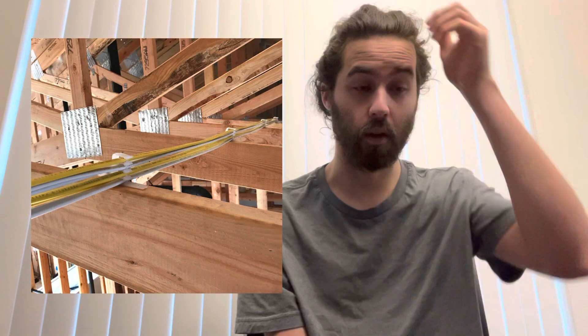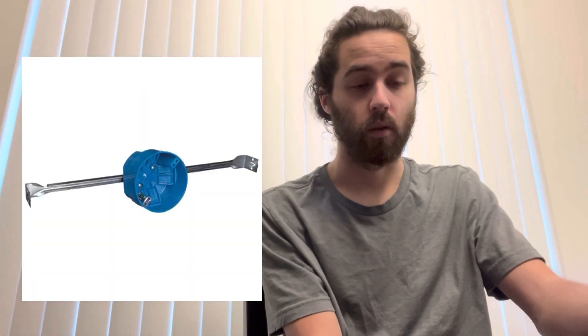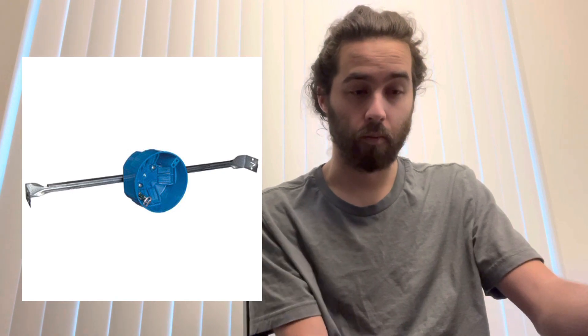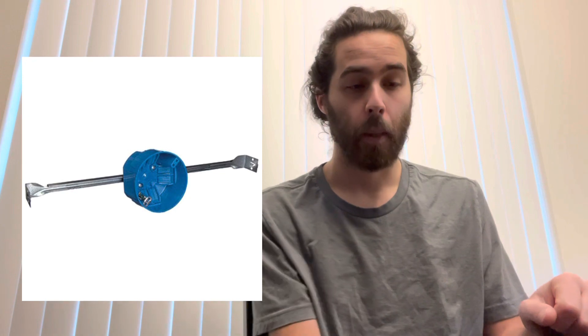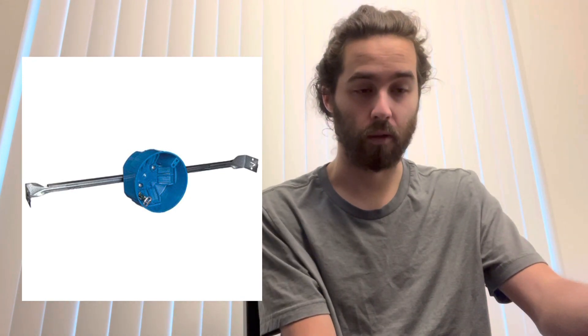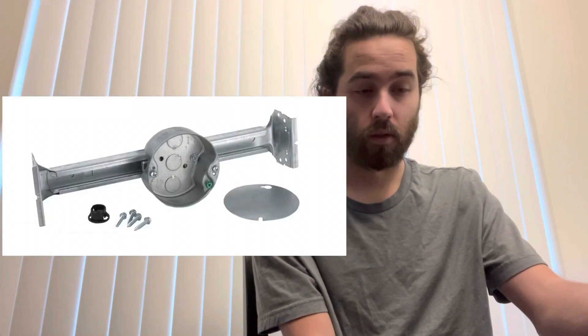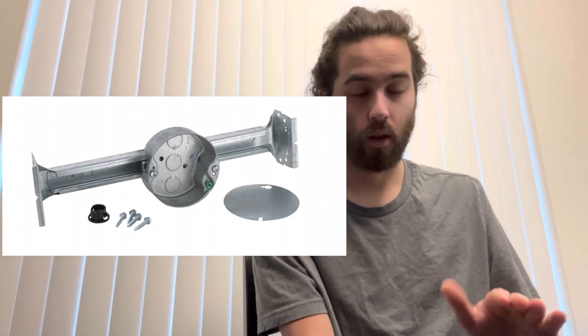Then we've got spreader bars or spreader bar boxes, which are basically a lighting box that spreads apart to the studs. Those are usually for bathroom lights or ceiling fans. The ceiling fan ones will need a different rating to hold the weight of the fan. I already covered the block. Then we've got the receptacle, or plug, which is just a device in every house to plug in your appliances, phone chargers, toasters — whatever you want.